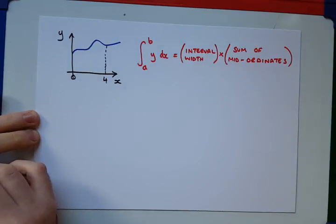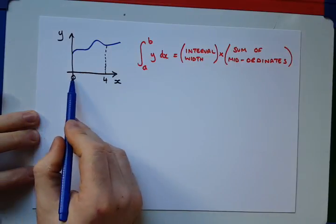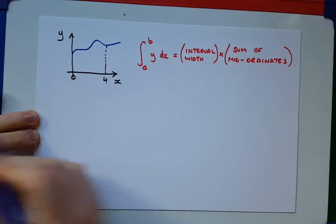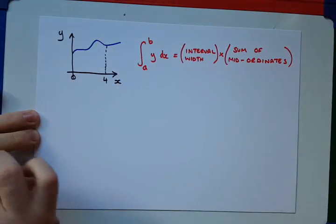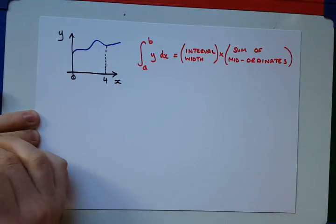So, in this case, because I'm going from 0 to 4, I'm going to split this up into 4 equal intervals, each of distance 1.